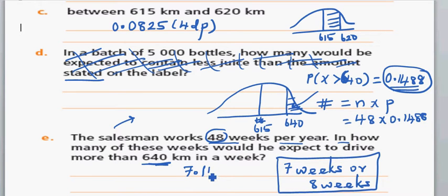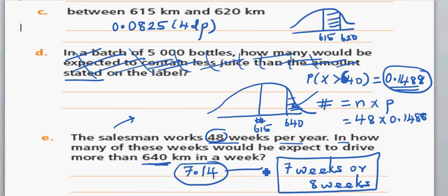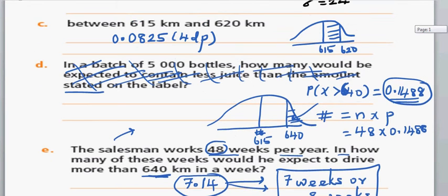You can't have exactly 7.14 weeks, so you can say it is either 7 weeks or 8 weeks — both are acceptable answers.